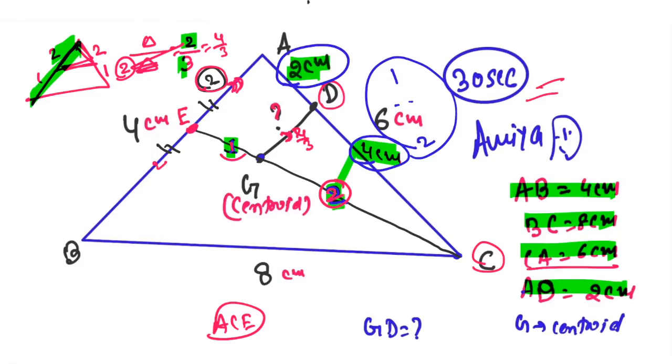Smaller triangle to bigger triangle, 2 out of 3. Bigger triangle base is 2, smaller triangle base is 4 by 3. And it's literally a 30 second question if you clicked this.